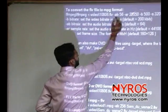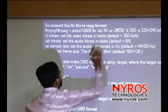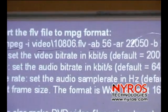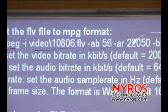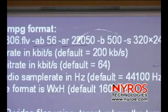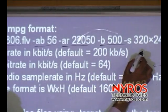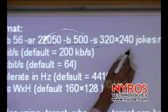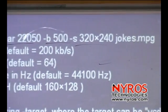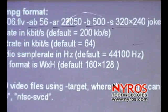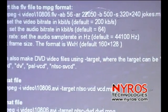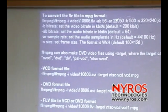The bit rate is 56 kilobytes per second and here is the sampling rate. B is the bit rate and the output size will be like this. You can produce that MPG file, which can be played in our media player like that.